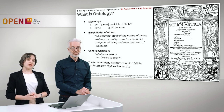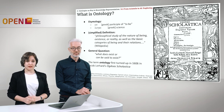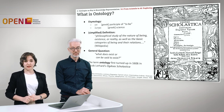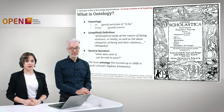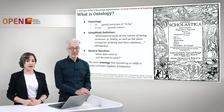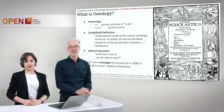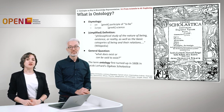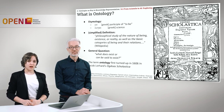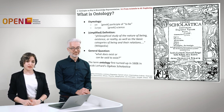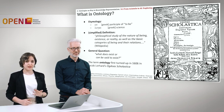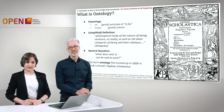If you look at the Wikipedia definition of ontology, it is quite similar: the philosophical study of the nature of being, existence, or reality, as well as the basic categories of being and their relations. So in general, ontology in philosophy deals with general questions such as what does exist, or what can be said to exist.